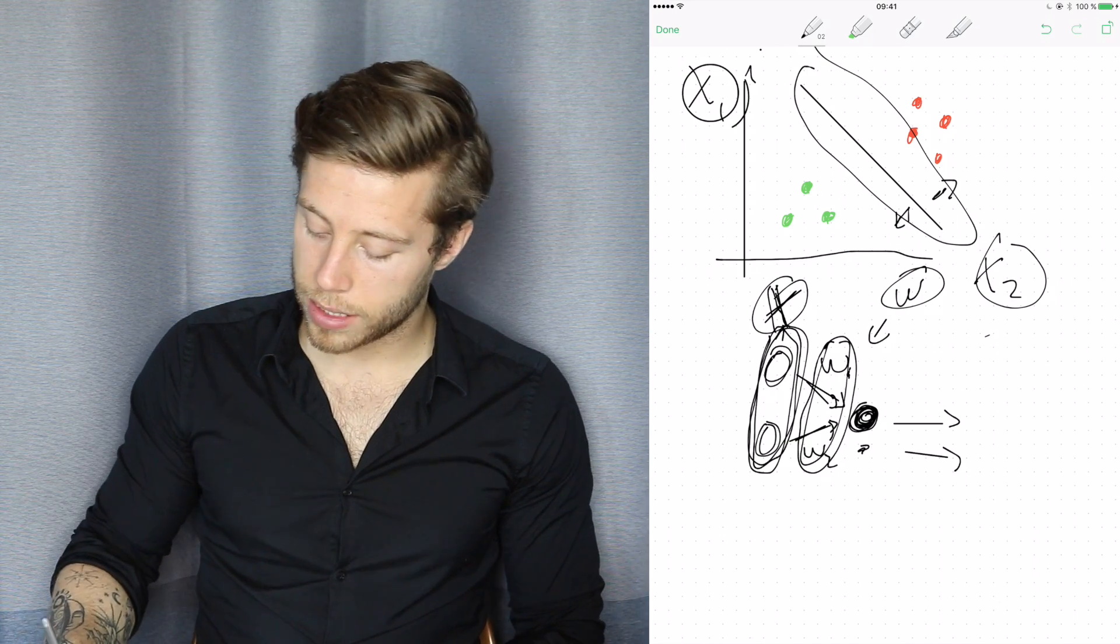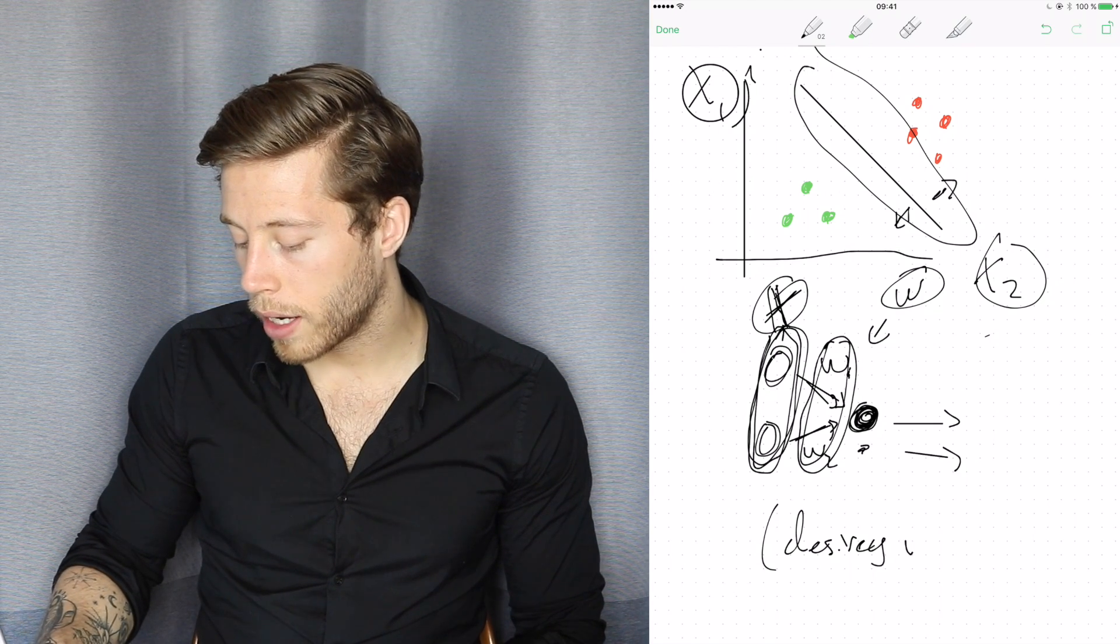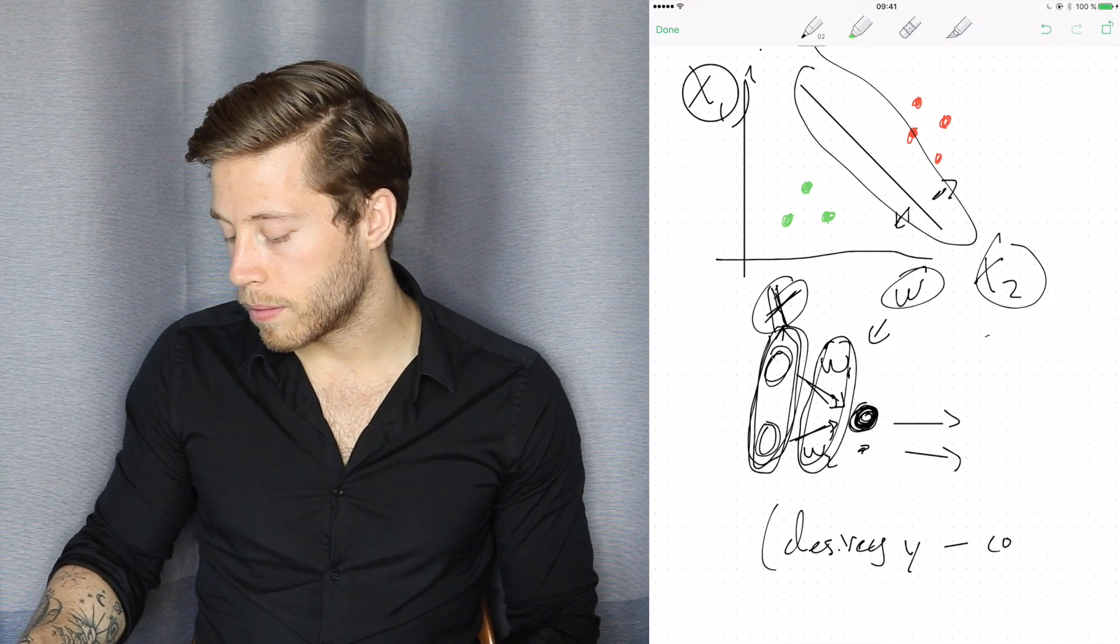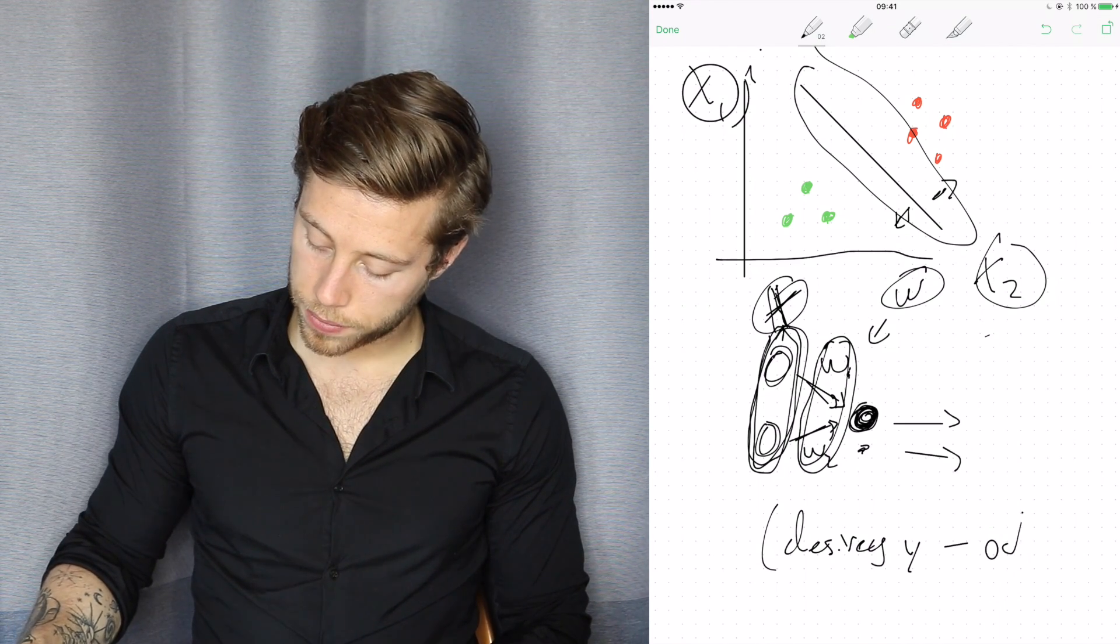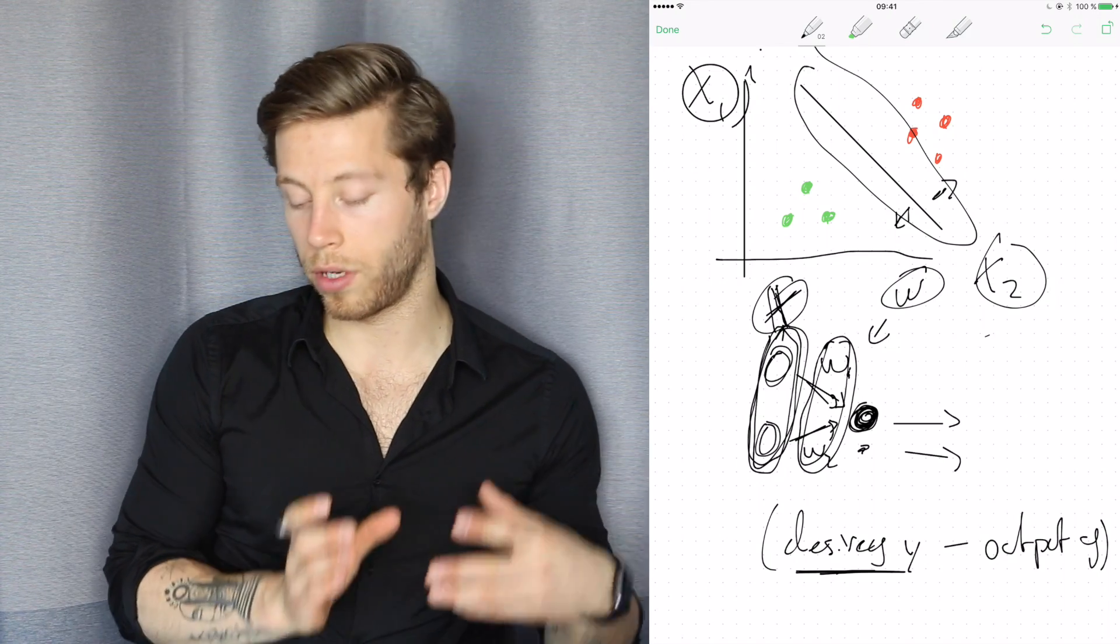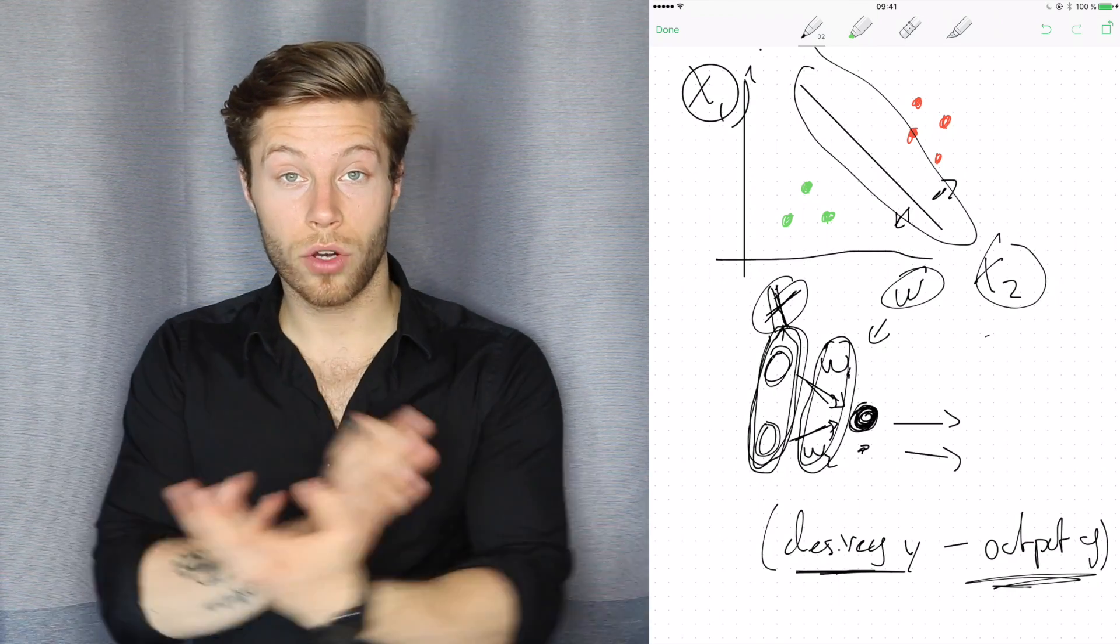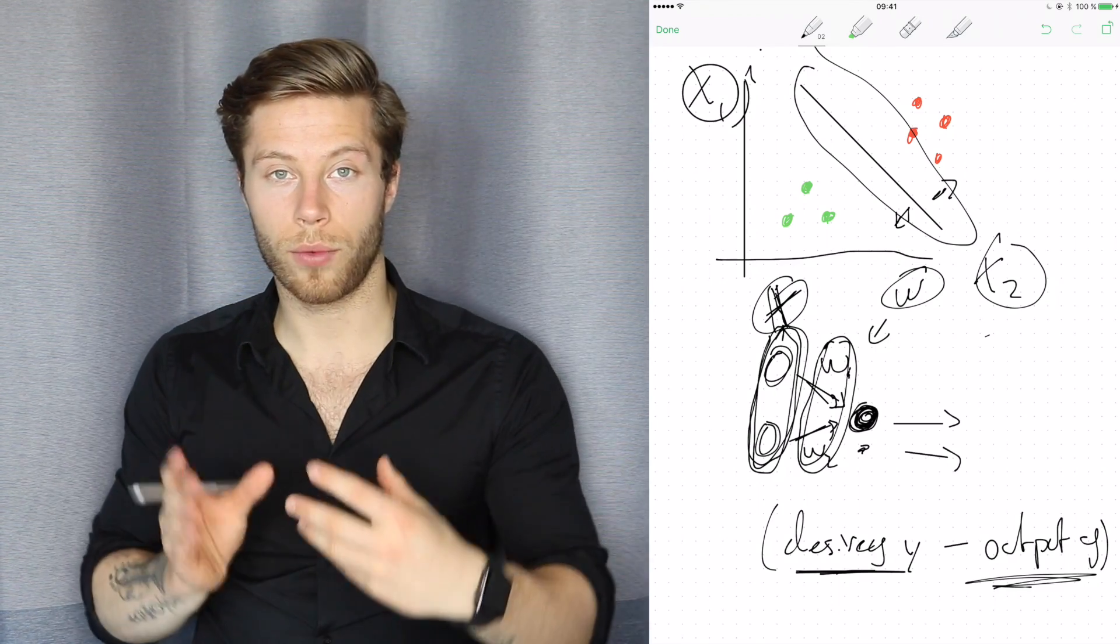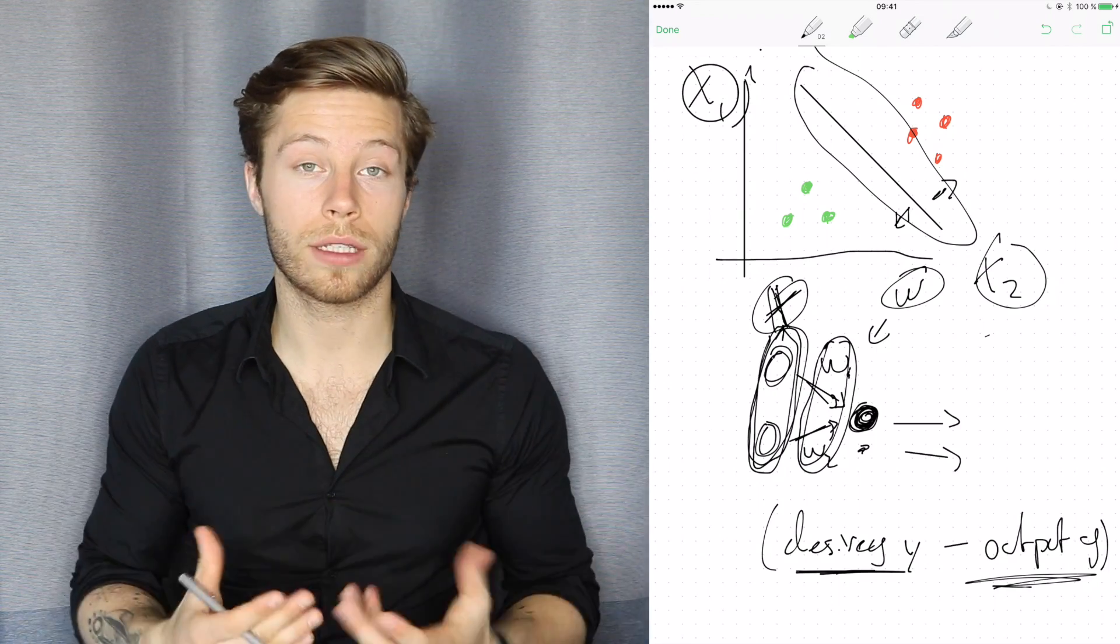And how we do that briefly is that we have the desired Y, the output Y. And we have the output Y. So we have the desired Y that we know this corresponding feature vector should have, and we know what our algorithm output, the output Y. Then we can look at the difference between these. And then we can use, well, if it was negative and it should be positive, then we can adjust our line a bit like this. And if it was the opposite, then we can adjust it a bit like this. And then we do this over and over and over.